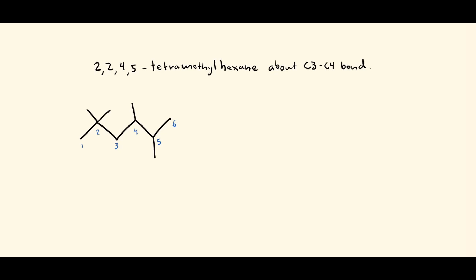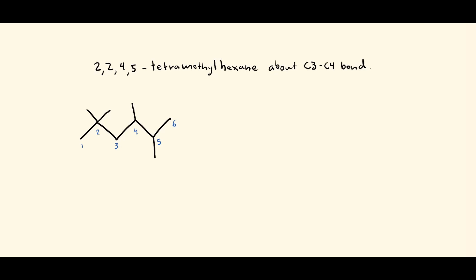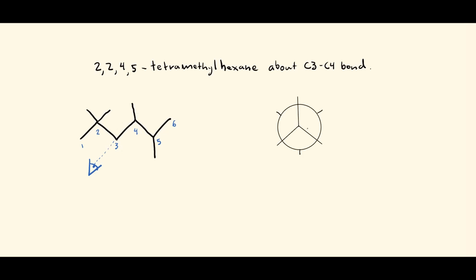This is our molecule and we are asked to do a conformational analysis about the carbon-3, carbon-4 bond. We can imagine this is our eye looking at the molecule through this bond — this is the bond being rotated. Let's start by drawing a Newman projection with a blank staggered Newman projection.